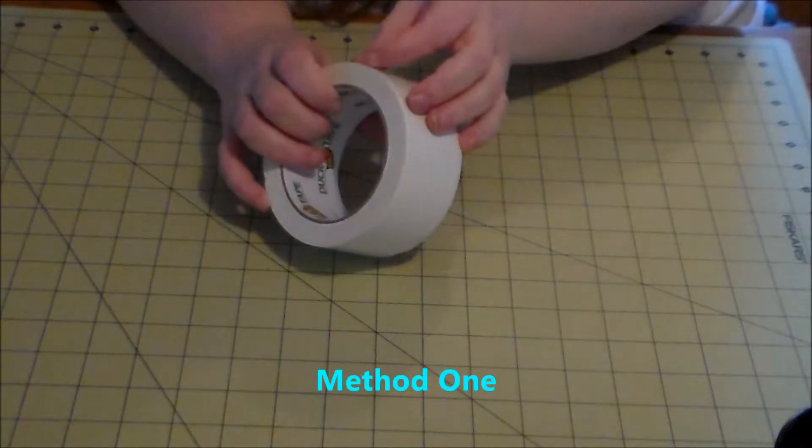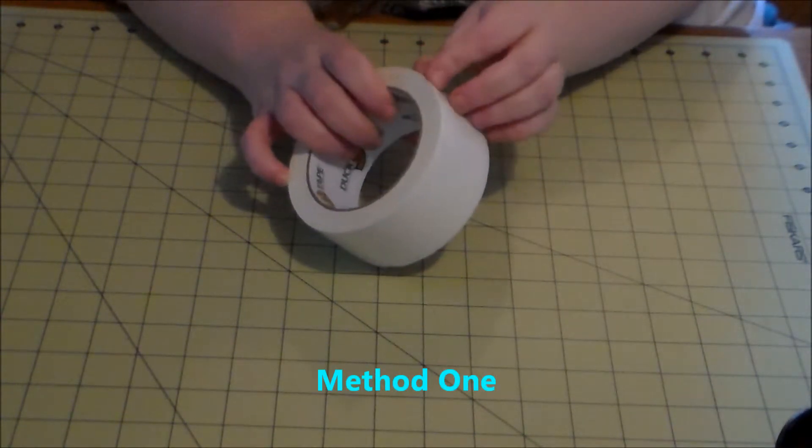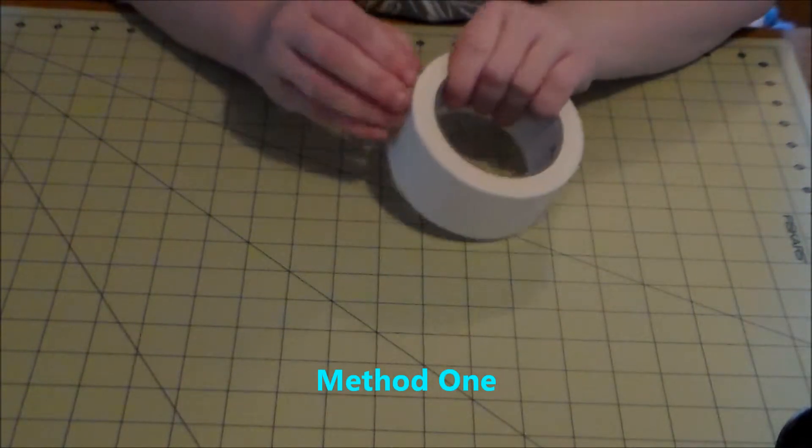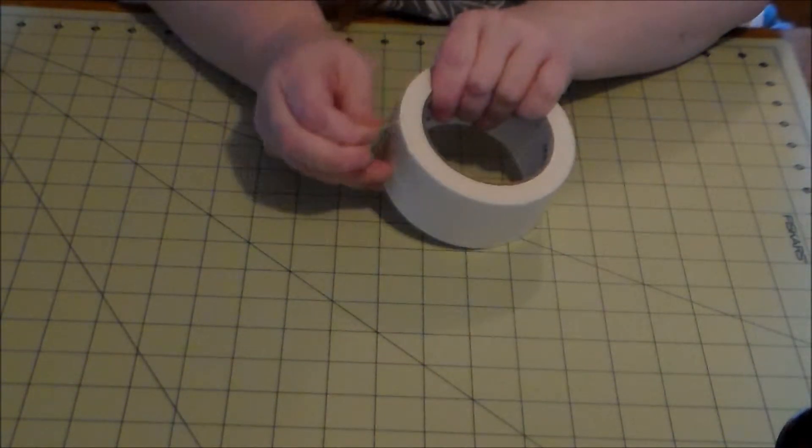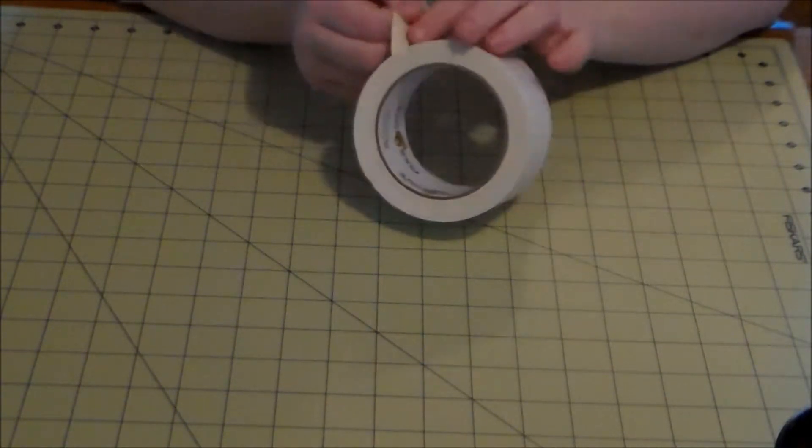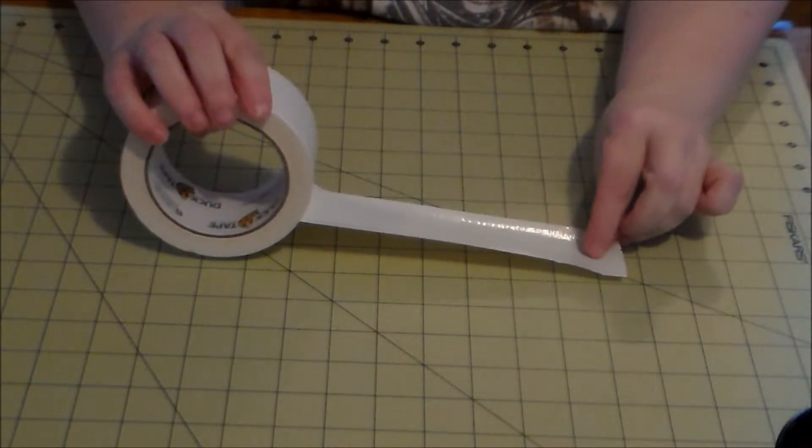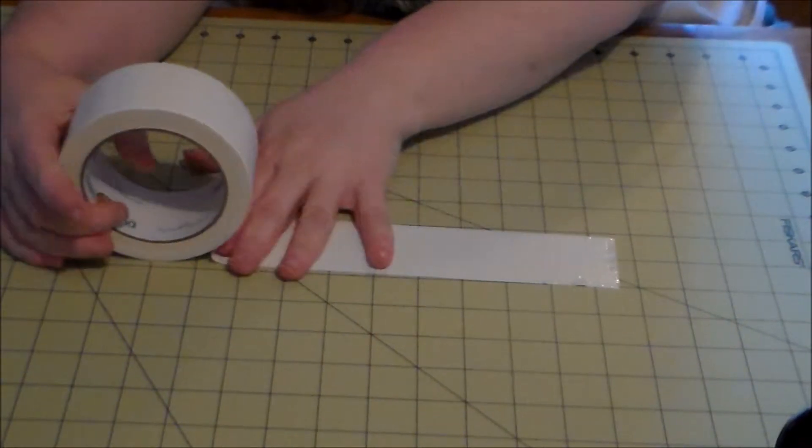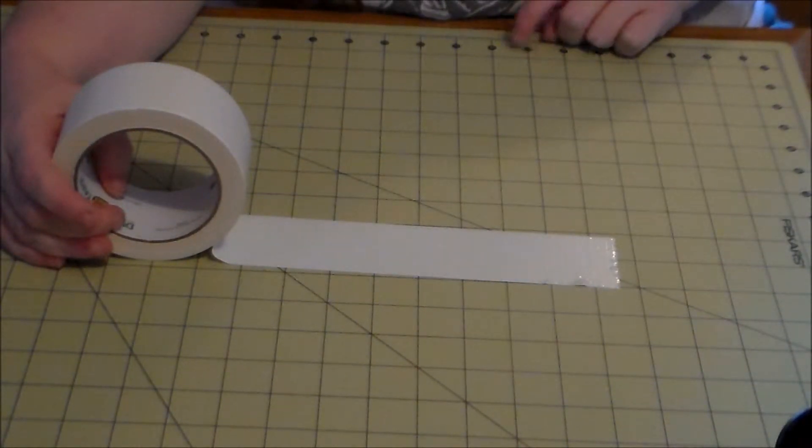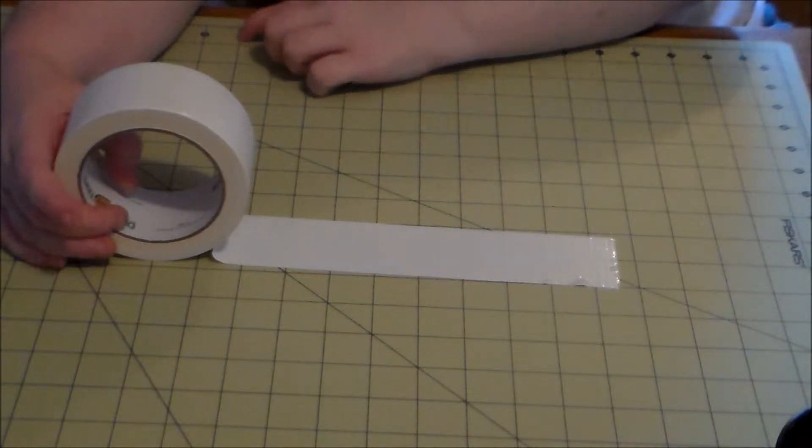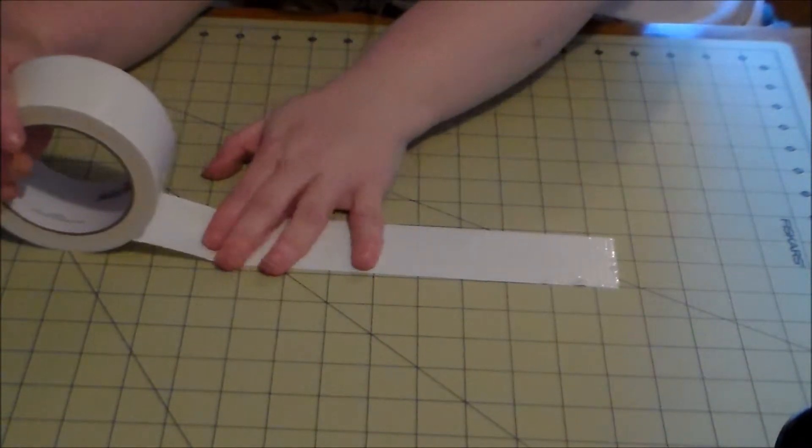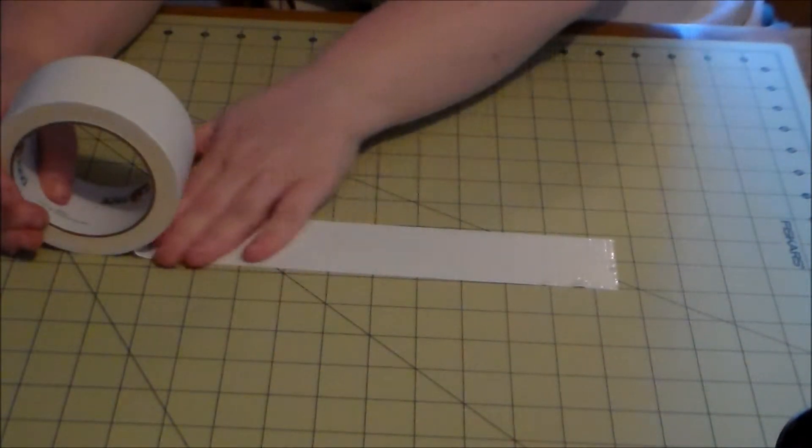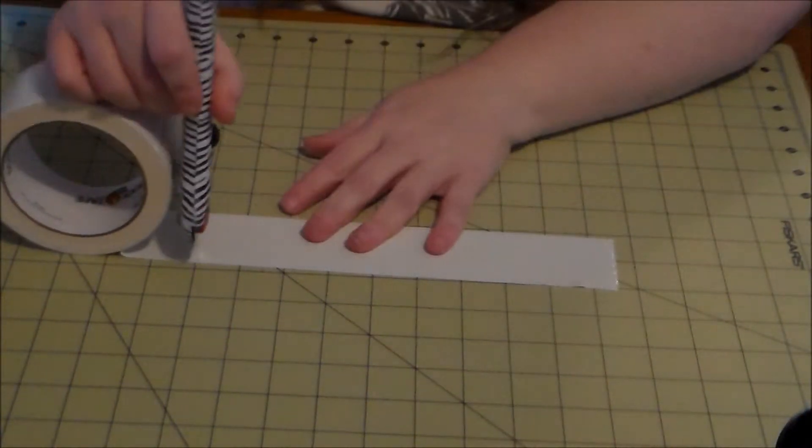The first thing you want to do is measure out nine inches of your duct tape and I'm just going to use the guide here. Now I go over a little bit just so that I know I have a pristine nine. One, two, three, four, five, six, seven, eight, nine. Okay and I'm going to cut right there.